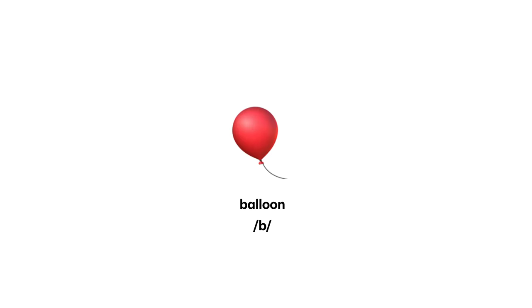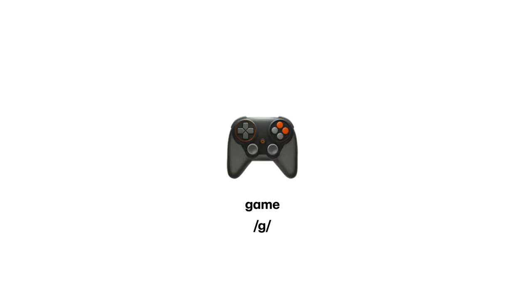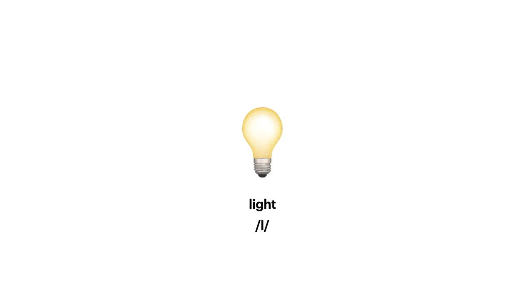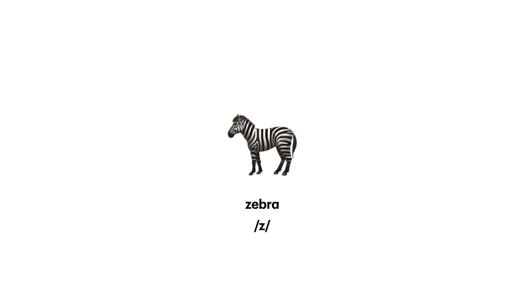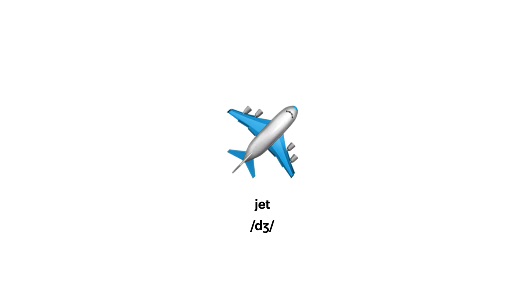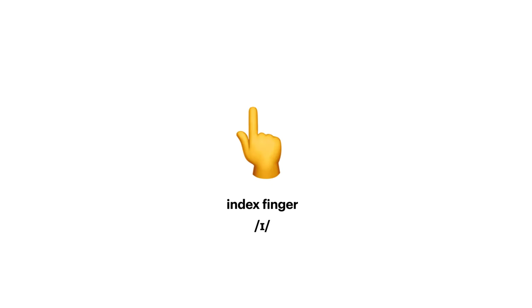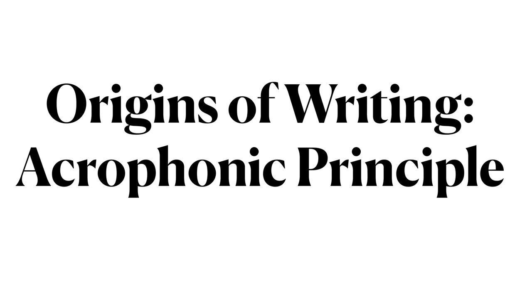Recall that previously we defined an entire alphabet using acrophony consisting of emoji symbols: balloon, dog, folder, game, helicopter, cat, light, mountain, knife, ring, penguin, rain, sun, tree, violin, water, yarn, zebra, shower, chair, jet, axe, index, island, elephant, octopus, orange, and umbrella.